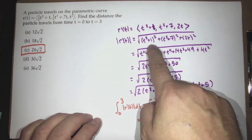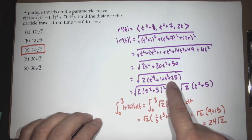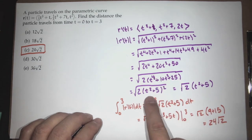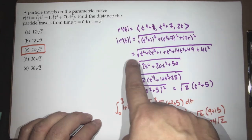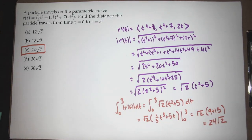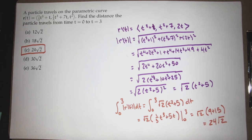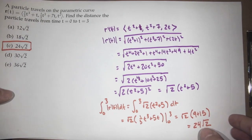You expand, you group, you factor out a two and say, 'Oh, what's left is a perfect square — life is good.' Now that you've done the magnitude of r prime, for length you integrate r prime. It's integration of speed. You end up with the root 2 integration, not too bad, and evaluate to get 24 root 2.